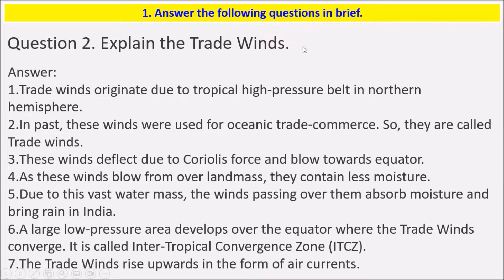Question 2: Explain the trade winds. Trade winds originate due to the tropical high pressure belt in the northern hemisphere. In the past, these winds were used for oceanic trade and commerce, so they are called trade winds. These winds deflect due to the Coriolis force and blow towards the equator.